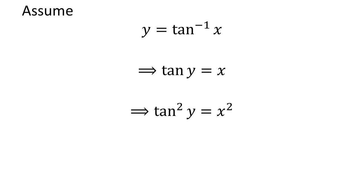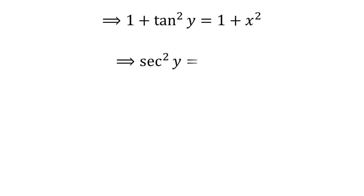Squaring both sides gives us tan²(y) = x². Adding 1 to both sides gives 1 + tan²(y) = 1 + x². By the well-known trigonometric identity, 1 plus the square of tangent of y is equal to the square of secant of y. So, sec²(y) = 1 + x².